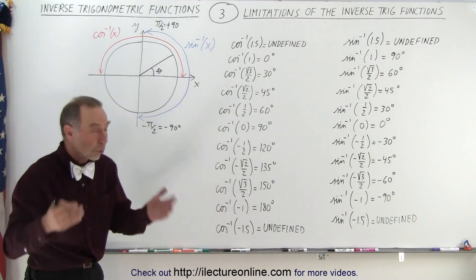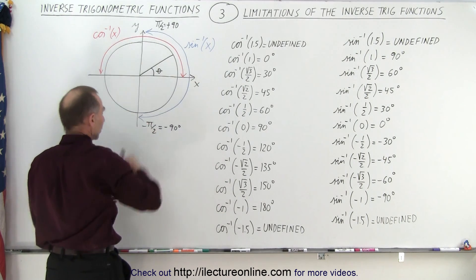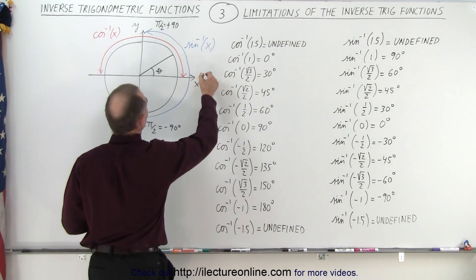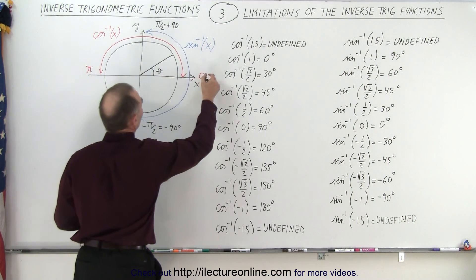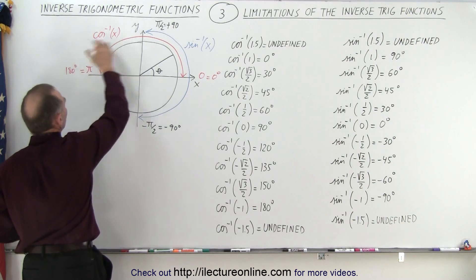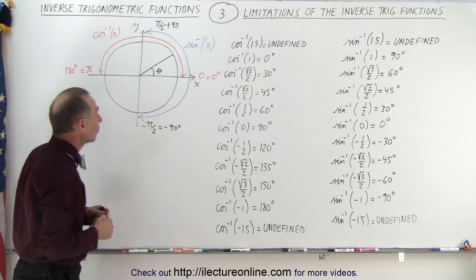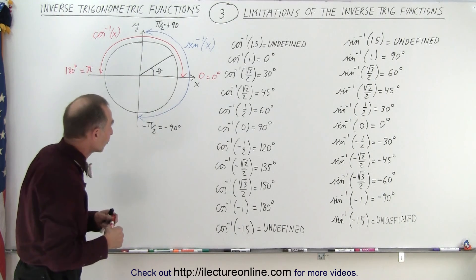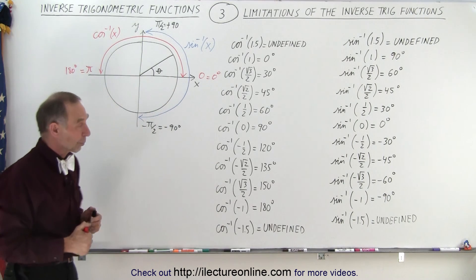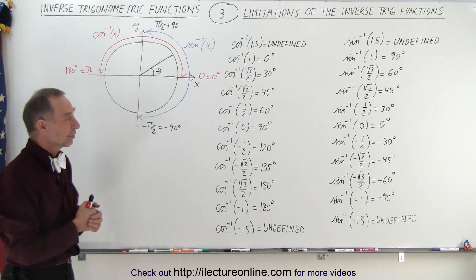So when we're talking about the inverse cosine function, we're talking about angles that range from 0 all the way to 180 degrees. For the cosine, the values range from 0 all the way to pi radians, and pi radians is equal to 180 degrees. So the range of angles associated with the inverse cosine go from 0 to 180 degrees, while the range for the inverse sine goes from minus 90 to plus 90 degrees. Make sure you realize that when you start working out some of these problems. Those are the limitations of the inverse sine and the inverse cosine functions.